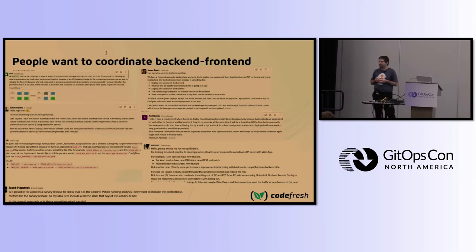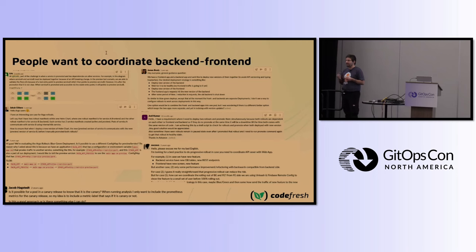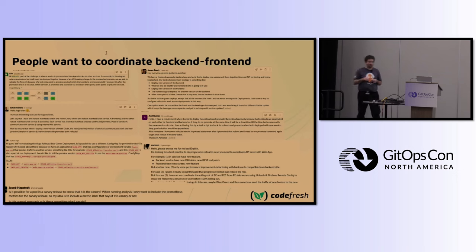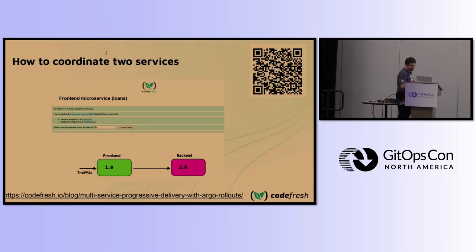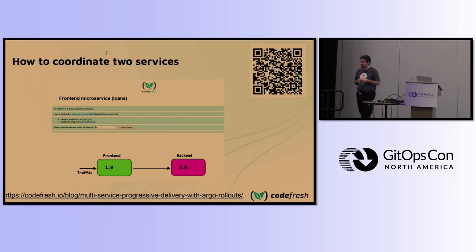How do I know this is a problem? As part of my role I go into the Argo Rollouts Slack channel in the CNCF instance, and I see people asking the same question all the time: 'I have a frontend and a backend and I want to deploy both at the same time.' So I sat down and created an example, and even wrote a blog post covering possible cases and workarounds.